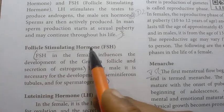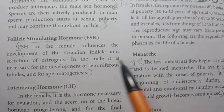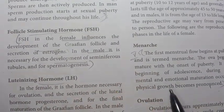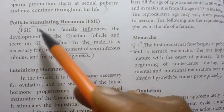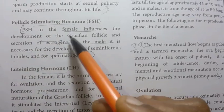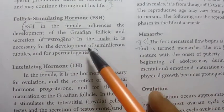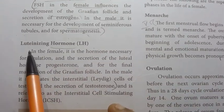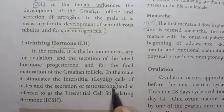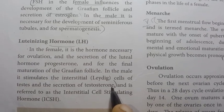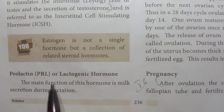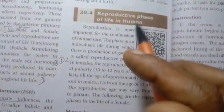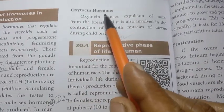Follicle stimulating hormone (FSH) — works in both female and male. In females, FSH influences development of Graafian follicle; in males, development of seminiferous tubules. Luteinizing hormone (LH), testosterone, prolactin or lactogenic hormone — two lines next, then oxytocin hormone — four lines detail.